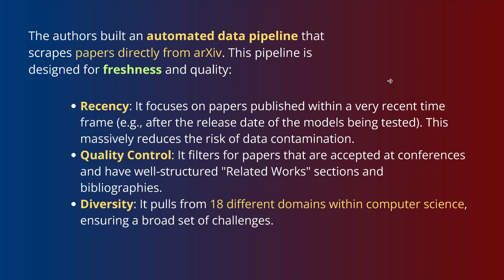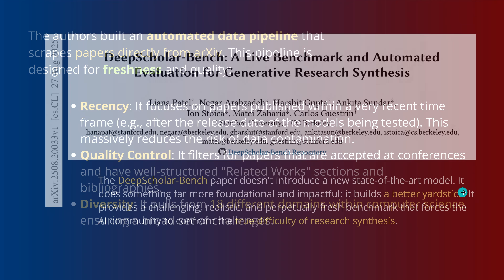The authors from Stanford and UC Berkeley built an automated data pipeline and said: not just for the internet, let's go for science — let's go to arXiv. They want a fresh dataset retrieved daily from arXiv. So three topics: recency, quality control, and diversity. They also limited themselves to computer science as a topic, making sure they have diverse topics with 18 different domains in computer science.